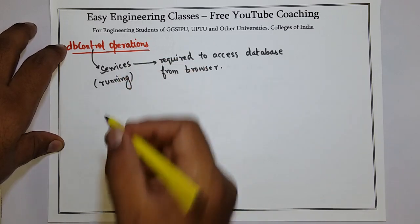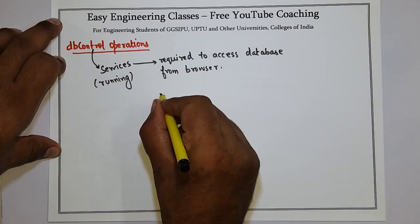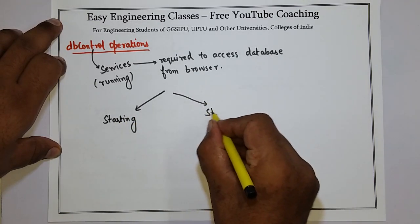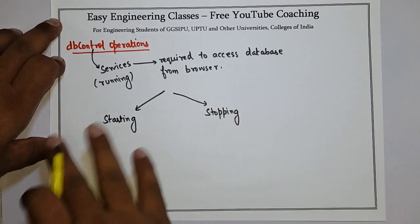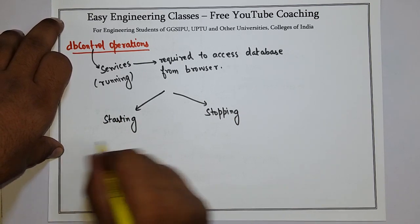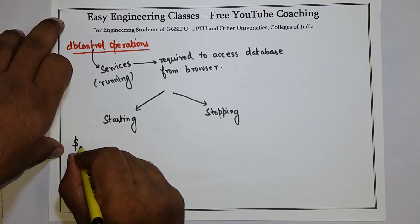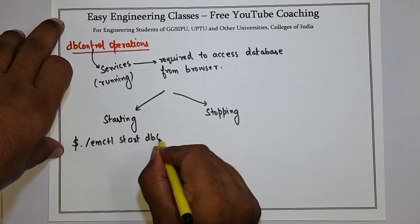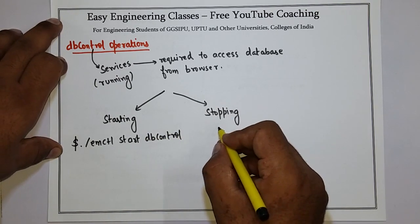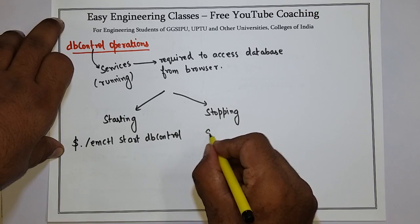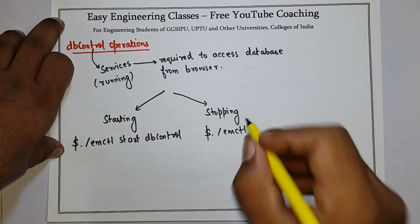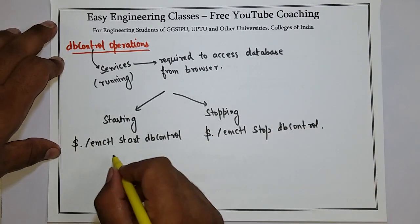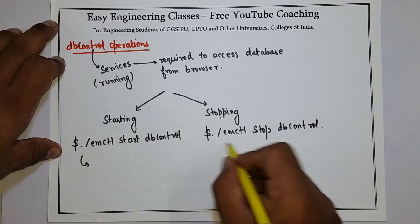There are two different operations that can be performed on DB Control: one is starting the DB Control and another is stopping DB Control. To start DB Control, you have to type the following command: dollar dot slash emctl start dbcontrol. And to stop DB Control, you just have to write dollar dot slash emctl stop dbcontrol. So these are the two basic commands required for starting and stopping.